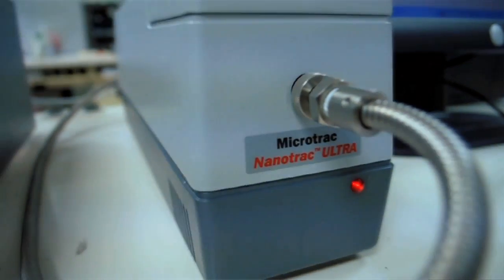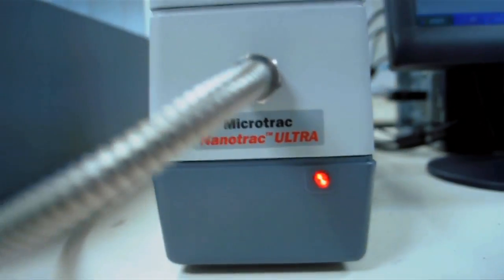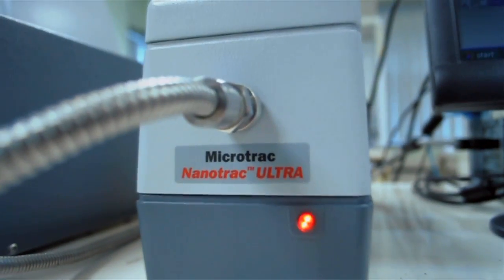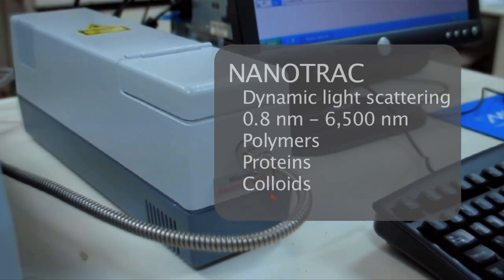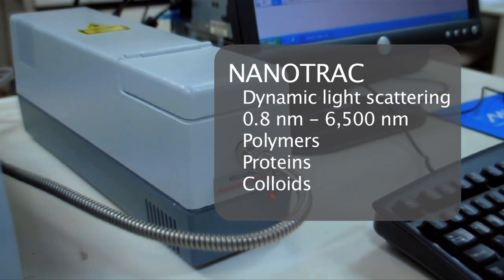I would like to introduce the Nanotrack, which is a particle size analyzer from the brand Microtrac. The Nanotrack is based on dynamic light scattering technology and allows the user to determine the particle size distribution of nanoparticles such as polymers, proteins, and colloidal suspensions.